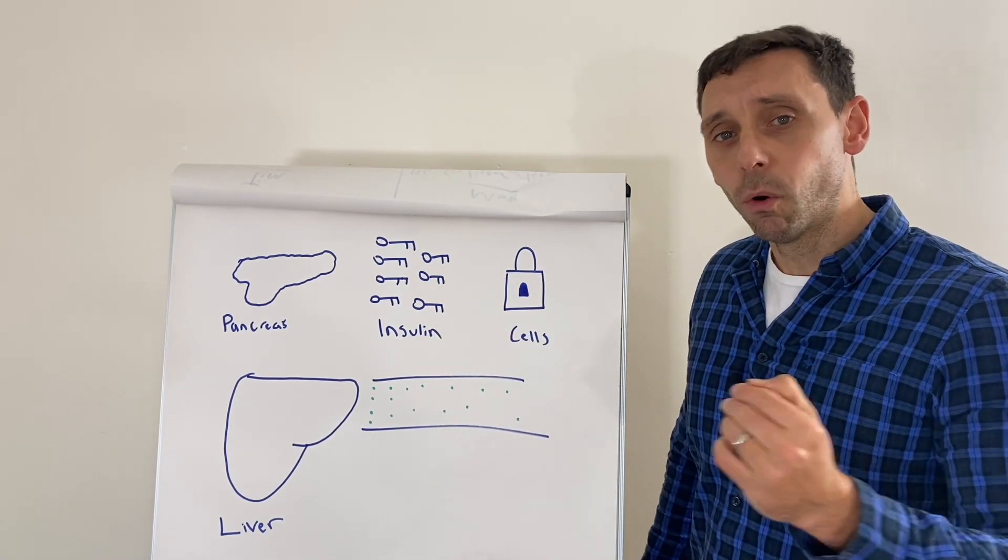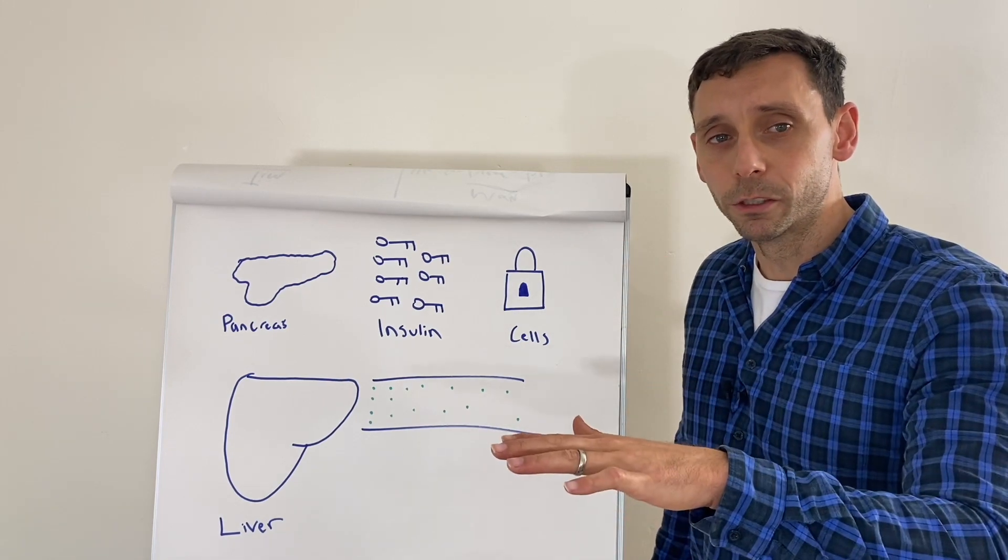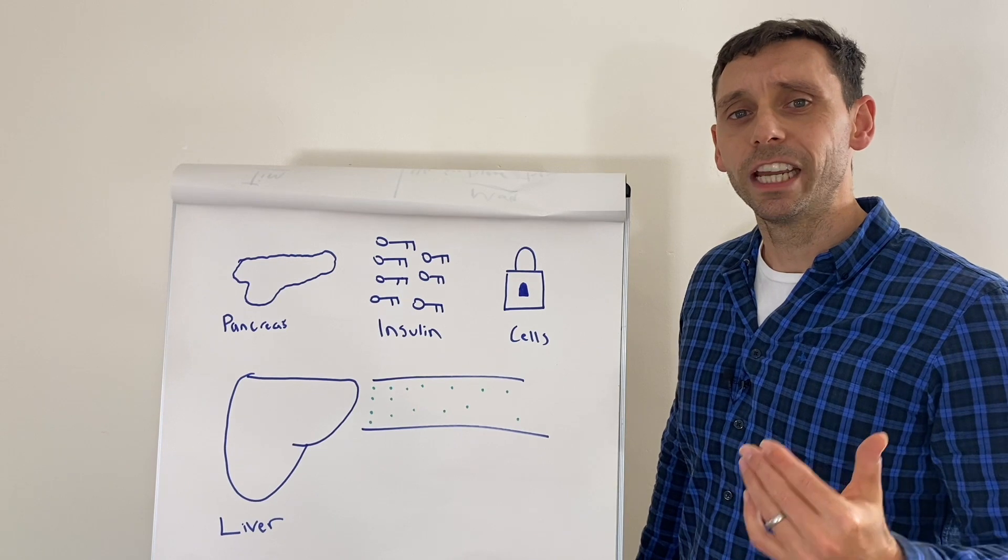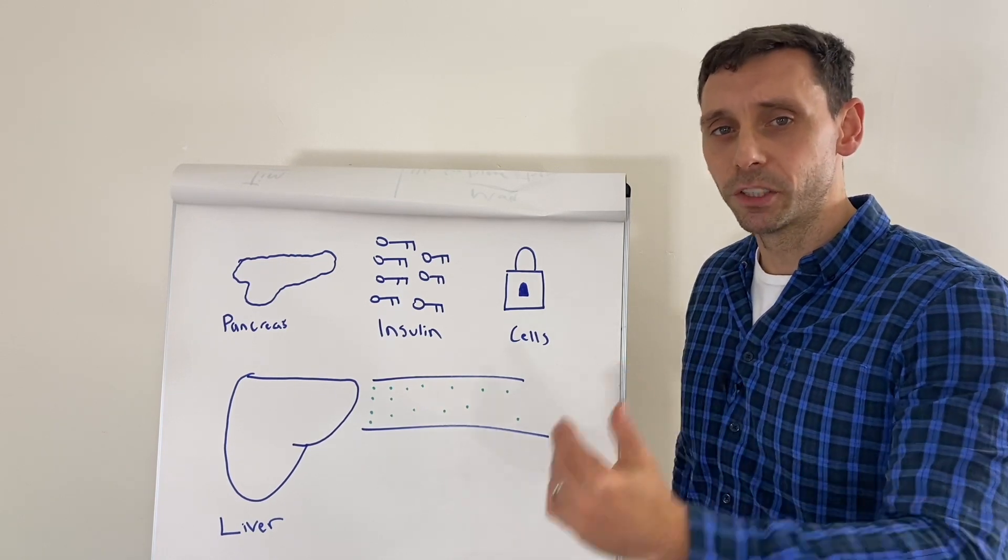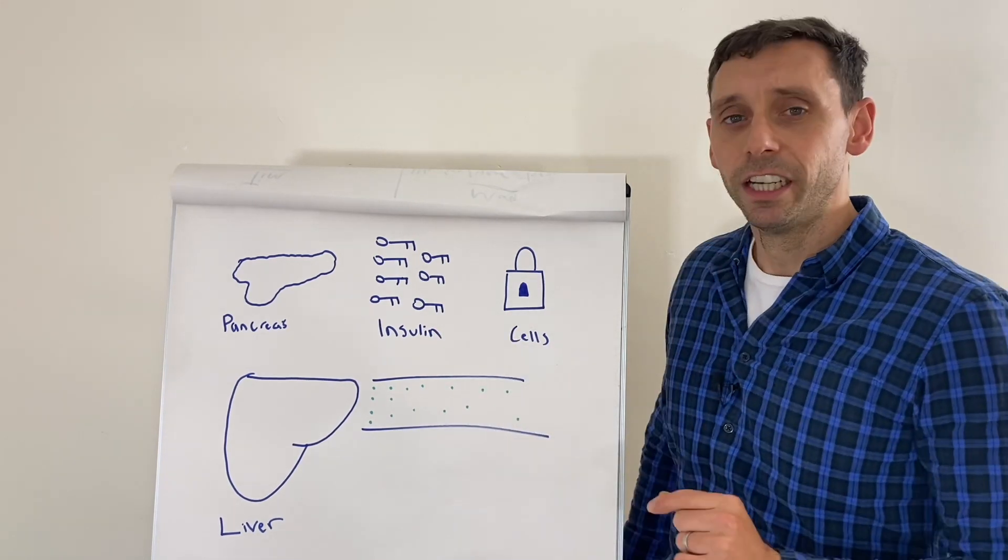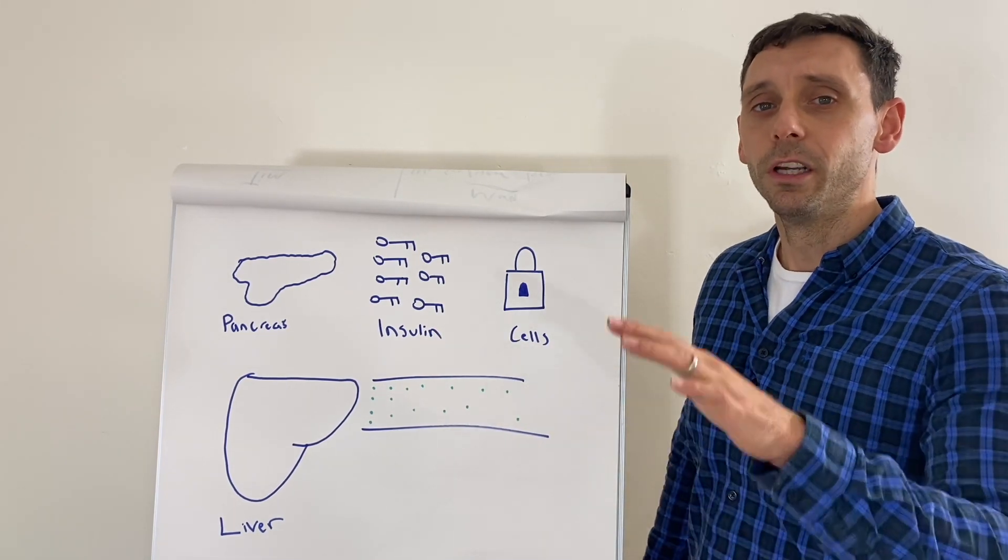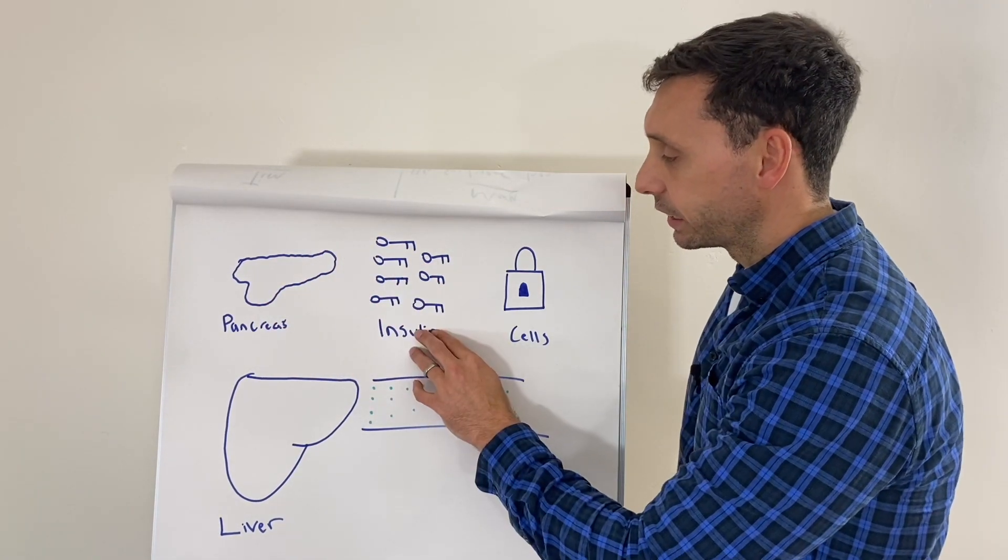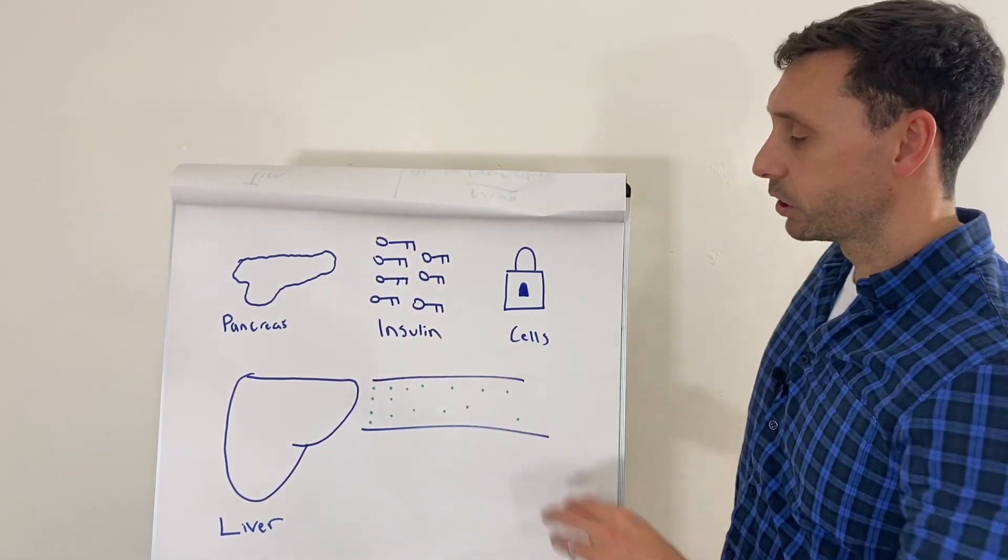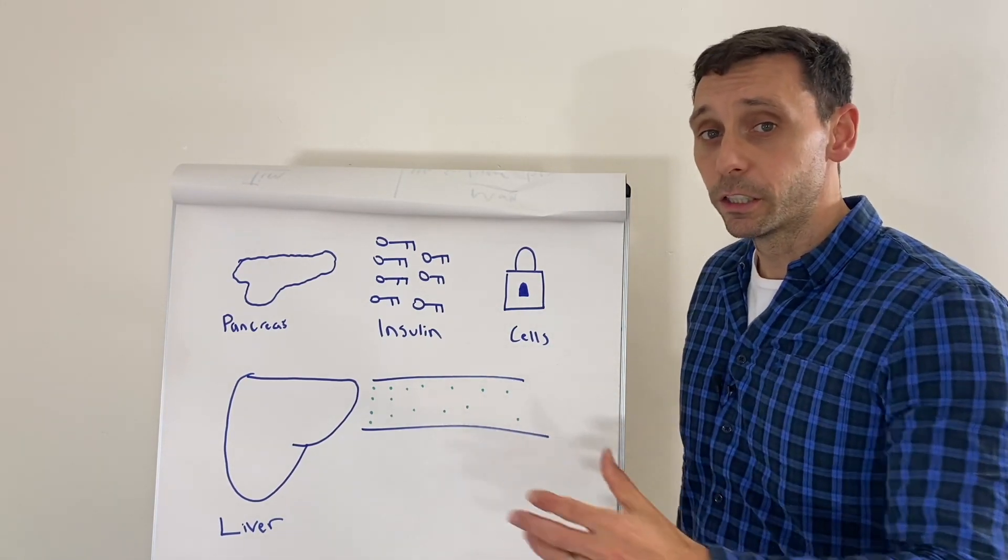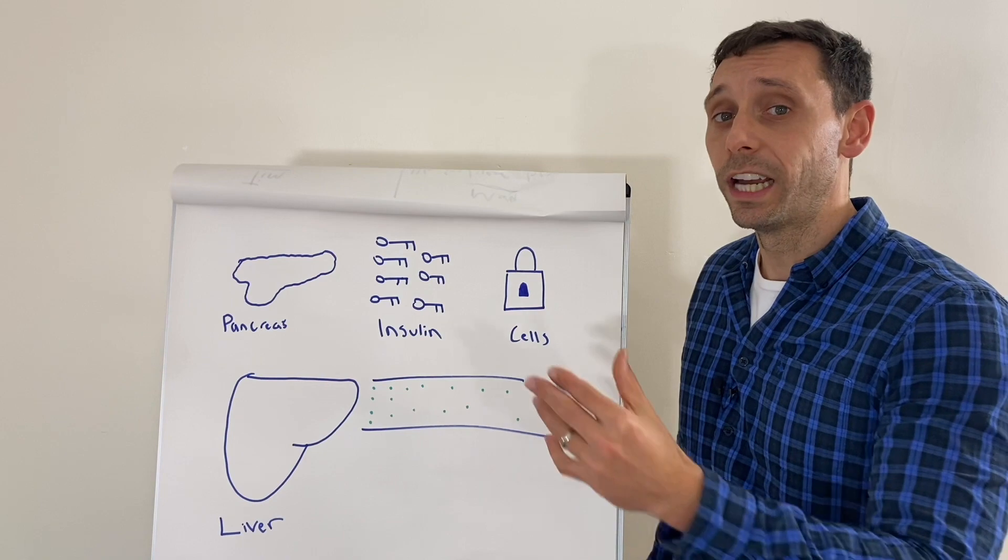Now insulin is the hormone in your body that lowers blood glucose levels. Whenever you hear the term hormone, essentially you should just hear the term messenger. Hormones are messengers. They go around the body and they tell your body to do things. And insulin's message is to tell your body to lower blood glucose levels. So the pancreas releases insulin and insulin tells the cells of the body to open up and let the glucose in from the blood so it can be used or stored as energy.